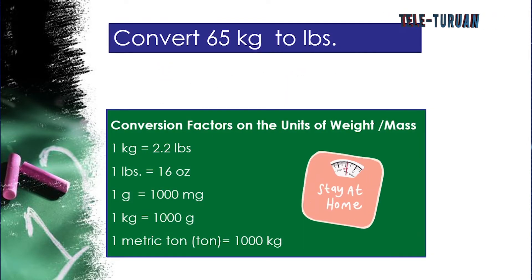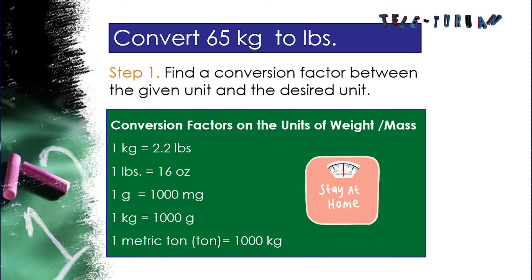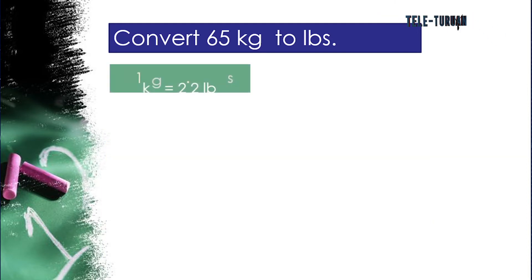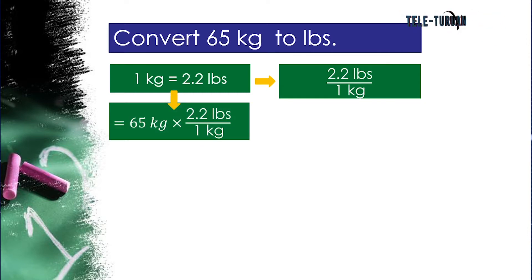To convert 65 kilograms to pounds, first, find the conversion factor. So we have 1 kilogram is equal to 2.2 pounds. If 1 kilogram equals 2.2 pounds, or 2.2 pounds over 1 kilogram, then multiply 65 kilograms by 2.2 pounds over 1 kilogram. Cancel out kilogram because it appears in the numerator and denominator.